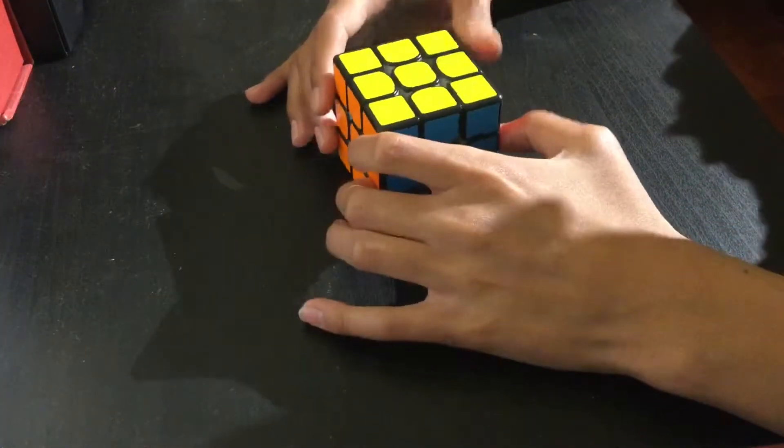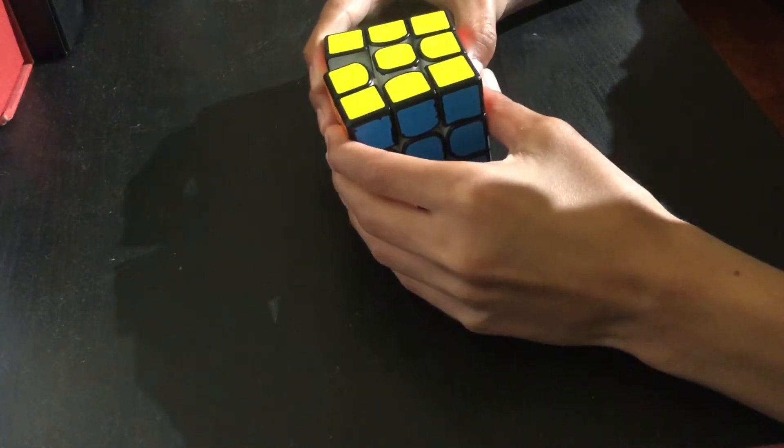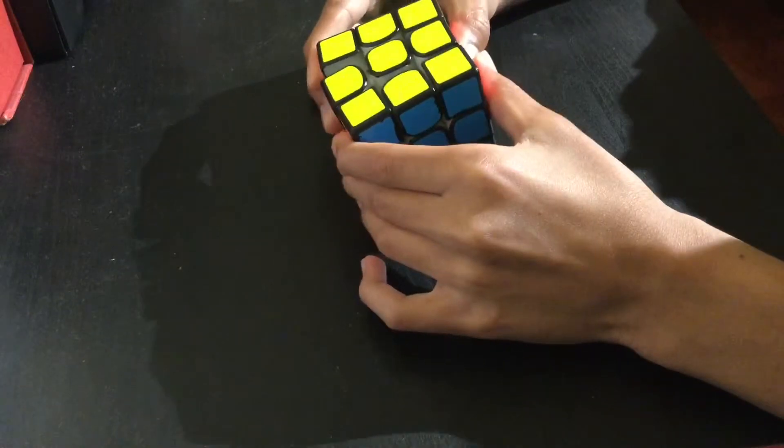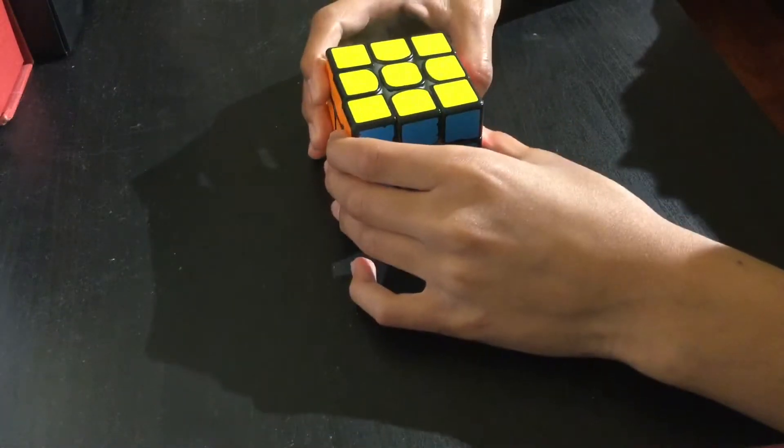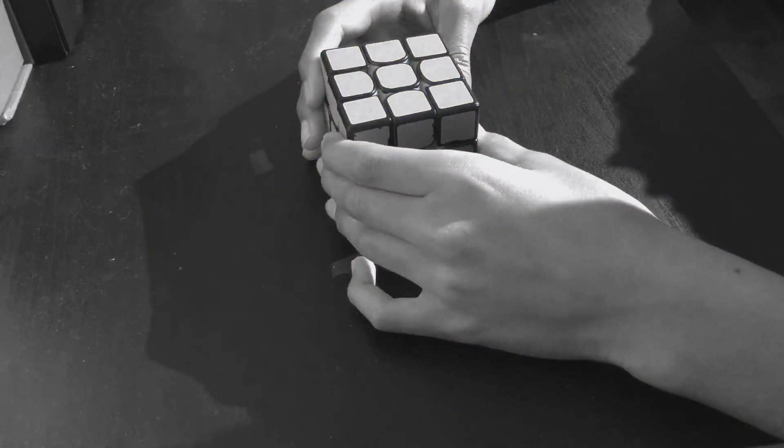The first and foremost step to becoming sub-20 is to practice F2L look ahead. If you've asked anyone how to become sub-20, they will have said look ahead, right? Whatever the heck that is.